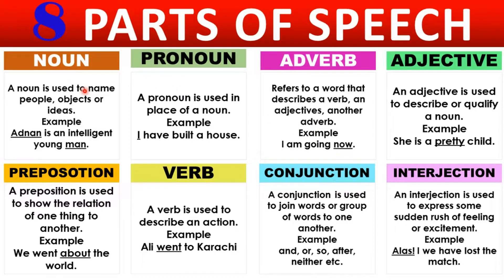Noun is the name of a person, place, thing, or object. Like 'Adnan' — it's a noun. It can also be a common name like 'bird' or 'man' — the general name for any human being or any bird like crow or sparrow. So the name of any person, place, thing, or object is a noun. But in place of a noun, if we use 'I', 'he', 'she', 'it', then that is called a pronoun — pronoun is used in place of a noun.